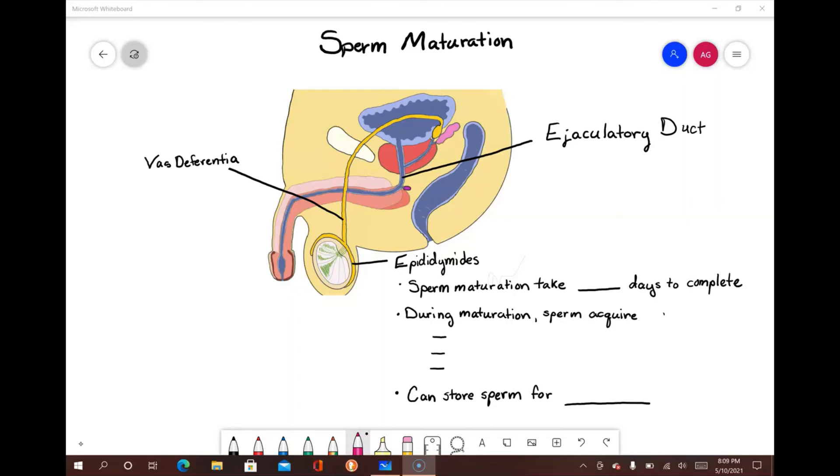The male duct system consists of the epididymis, vas deferens, and ejaculatory duct. At the end of spermatogenesis just discussed, the sperm have been moved into the epididymis, the little hats on top of the testes. It is here that sperm mature and develop their full fertilization capabilities. Sperm maturation within the epididymis takes about 14 days to complete. It involves the sperm acquiring the ability of motility, oocyte penetration, and fertilization.